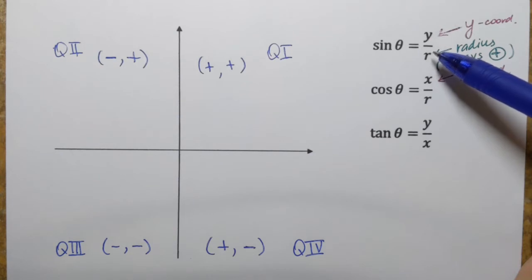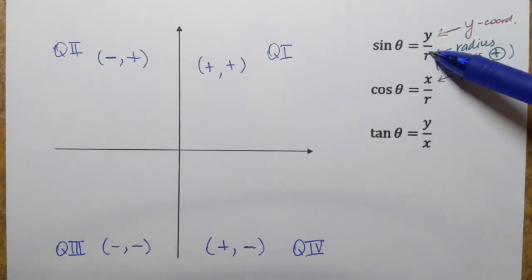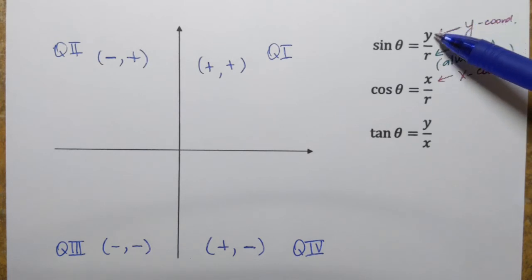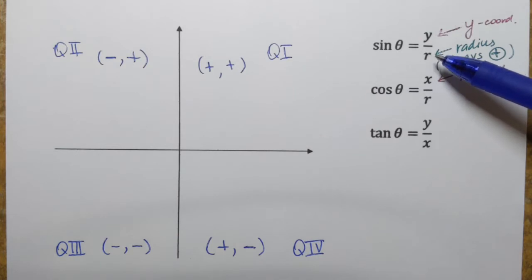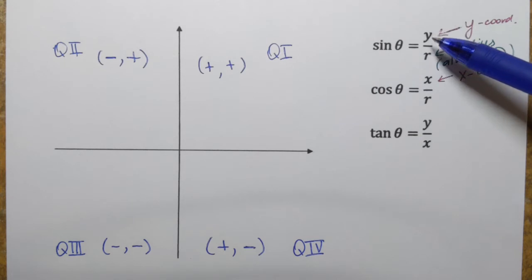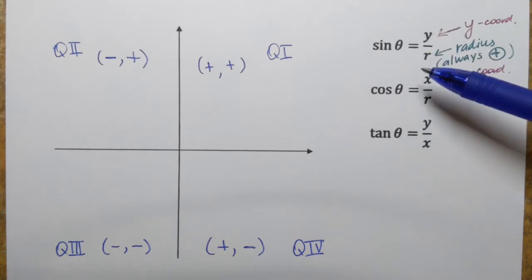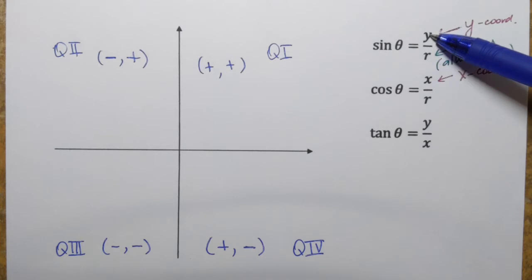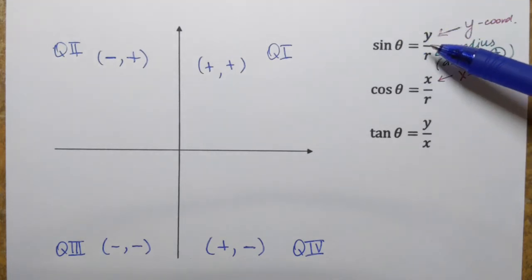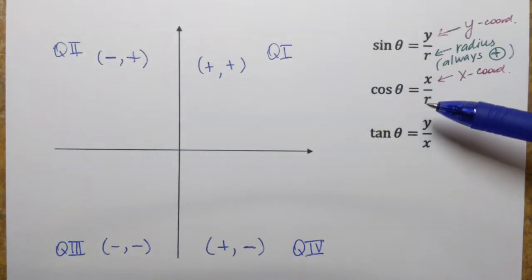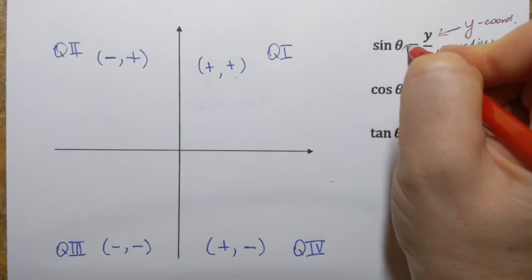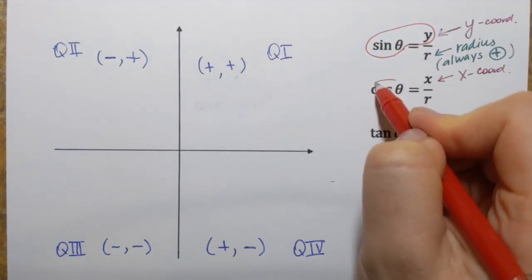Going back to the definitions, for sine and cosine, in each ratio the denominator r will always be positive. When we divide a positive number by a positive number the result is positive, but when we divide a negative number by a positive number the result is negative. That means the sign of sine or cosine will always depend on the coordinates — on the y-coordinate for sine, or on the x-coordinate for cosine. Simply associate sine with the y-coordinate and cosine with the x-coordinate.